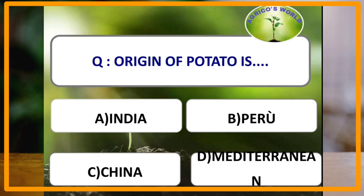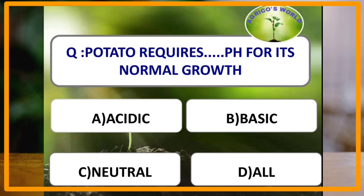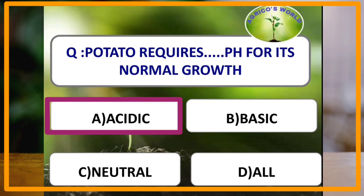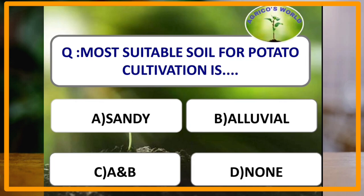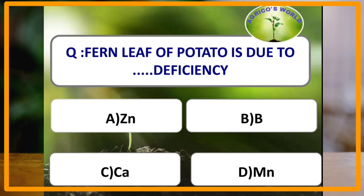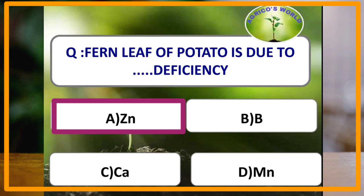Potato requires acidic pH for its normal growth and development. Along with potato, rice and tea also require acidic pH. The most suitable soils for potato cultivation are alluvial and sandy soils. Fern leaf of potato is due to deficiency of the nutrient zinc.